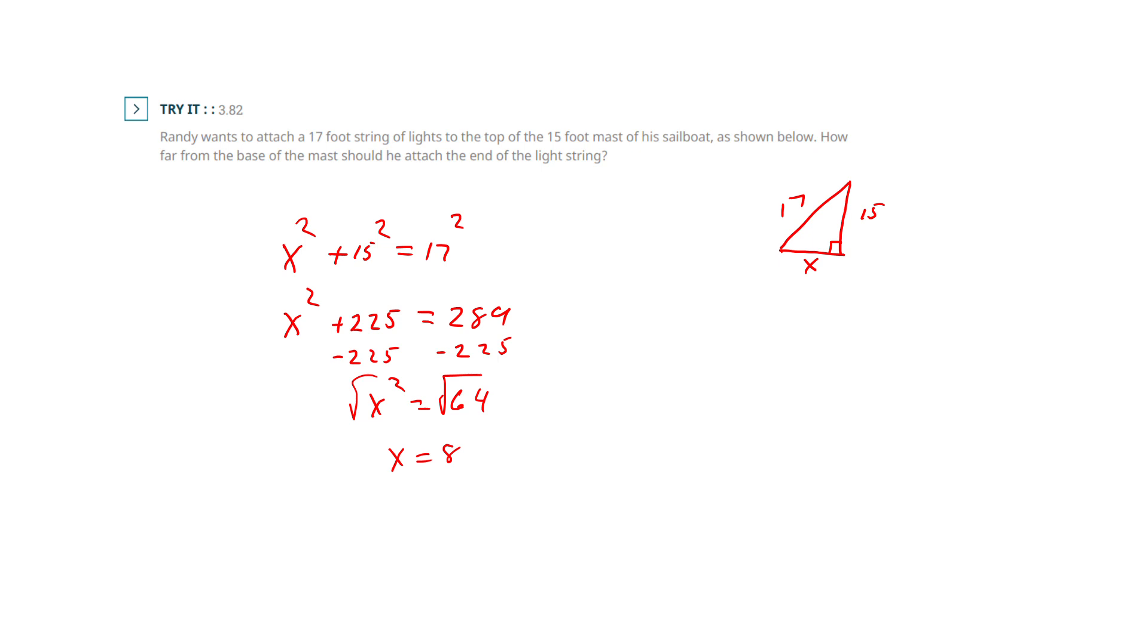So anyway, I hope that makes sense. When you have the x squared, you're just isolating that x squared, just as if it was an x. You're just trying to get him alone. You're going to follow all the same rules.